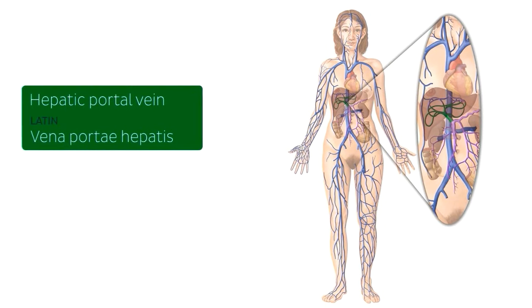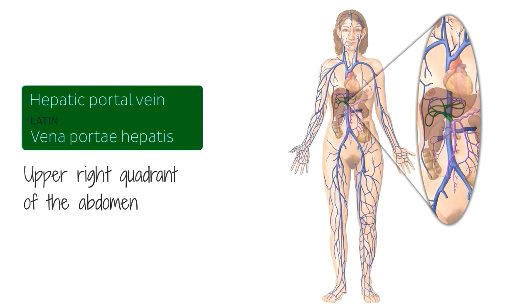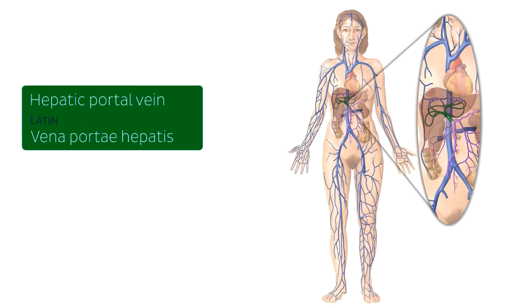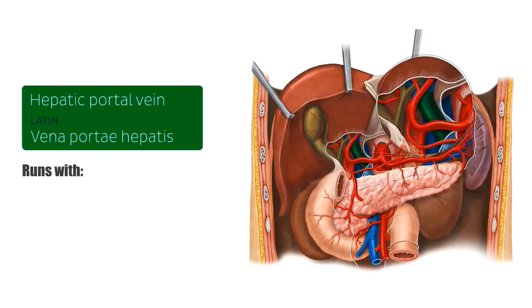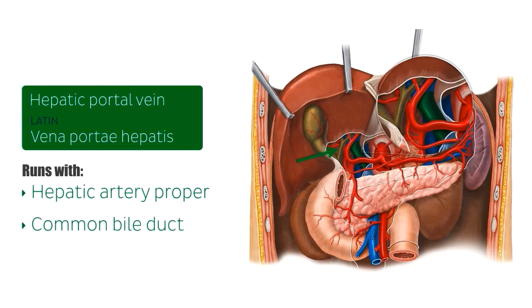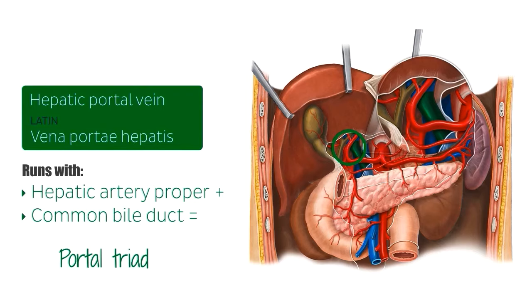As you can see in this image, the hepatic portal vein, highlighted in green, can be found in the upper right quadrant of the abdomen. The portal vein is valveless and generally reaches a length of 8 centimetres or 3 inches in adults. The portal vein ascends obliquely to the liver behind the duodenum. As it ascends, it runs within the right free border of the lesser omentum, along with two other structures, the hepatic artery proper and the common bile duct, to form a structure known as the portal triad, which we'll talk a little bit more about later in the tutorial.